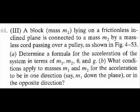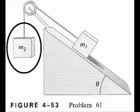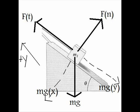For part B, it asks what conditions apply to masses M1 and M2 for the acceleration to be in one direction, say M down the plane, or in the opposite direction? The conditions that apply to mass 1 and mass 2 where the acceleration of block 1 and block 2 to be in one direction depends on the force of gravity.